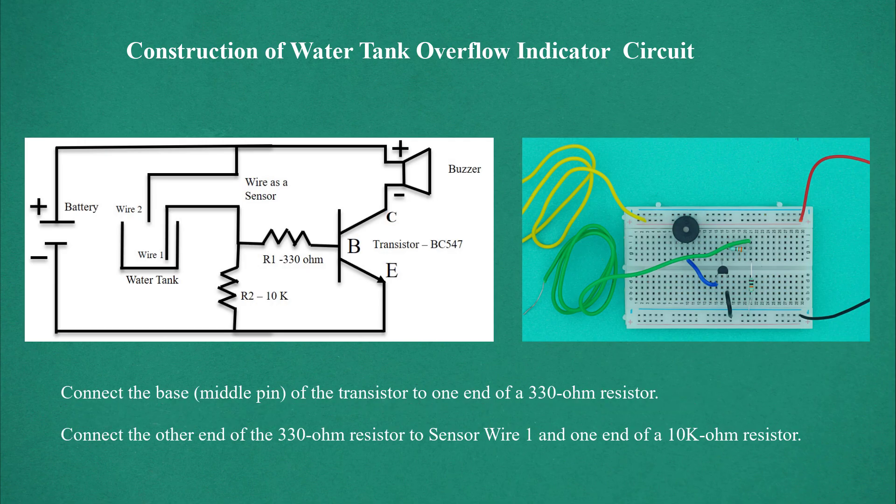Connect the base middle pin of the transistor to one end of a 330-ohm resistor. Connect the other end of the 330-ohm resistor to sensor wire one and one end of a 10k-ohm resistor.